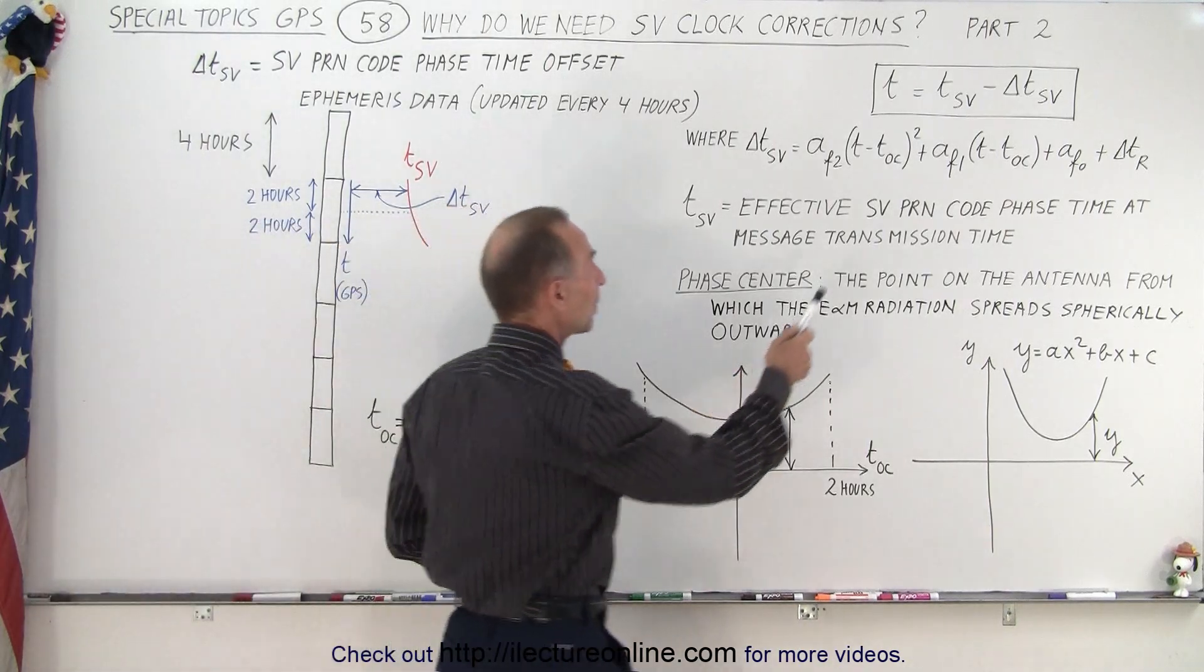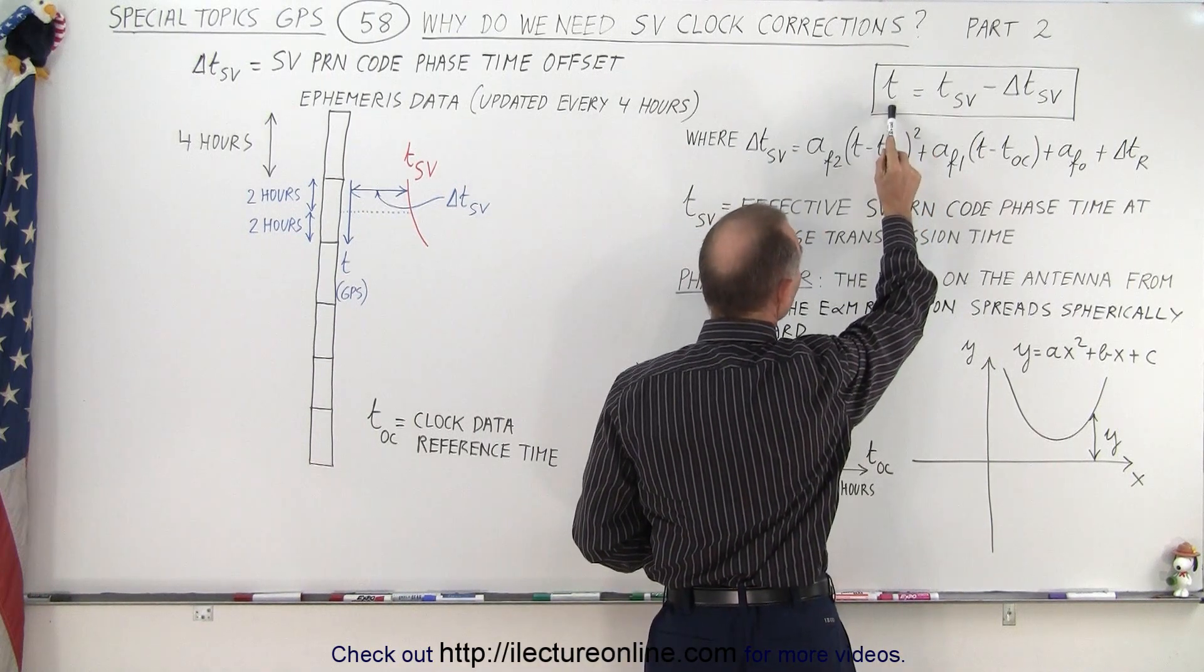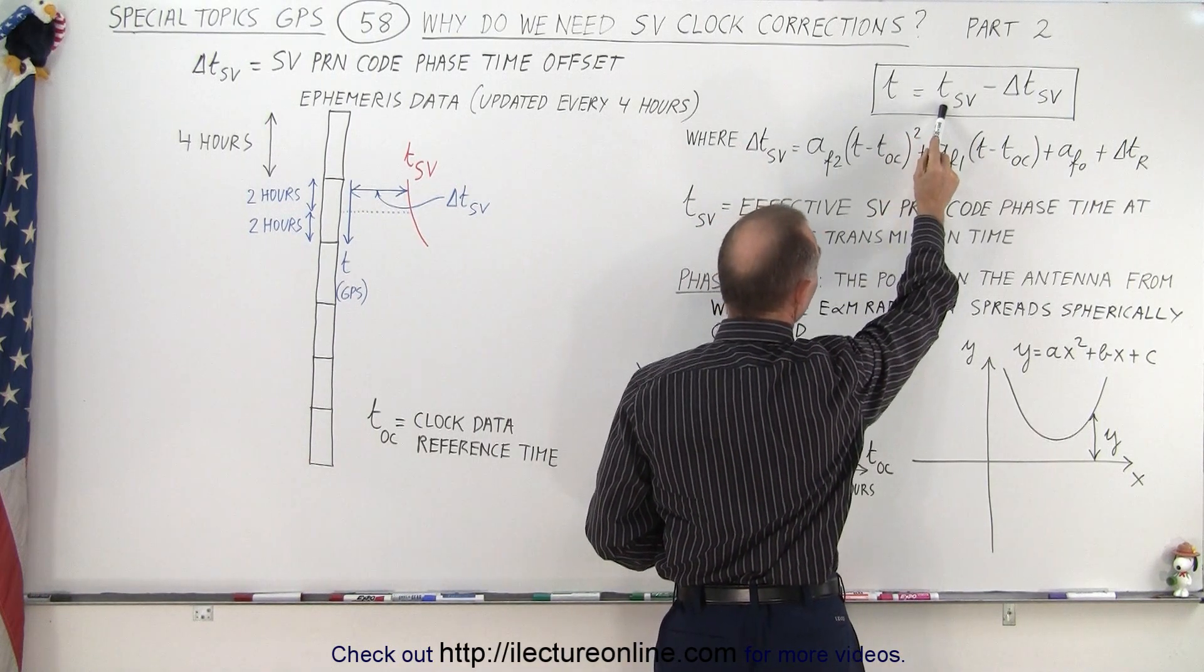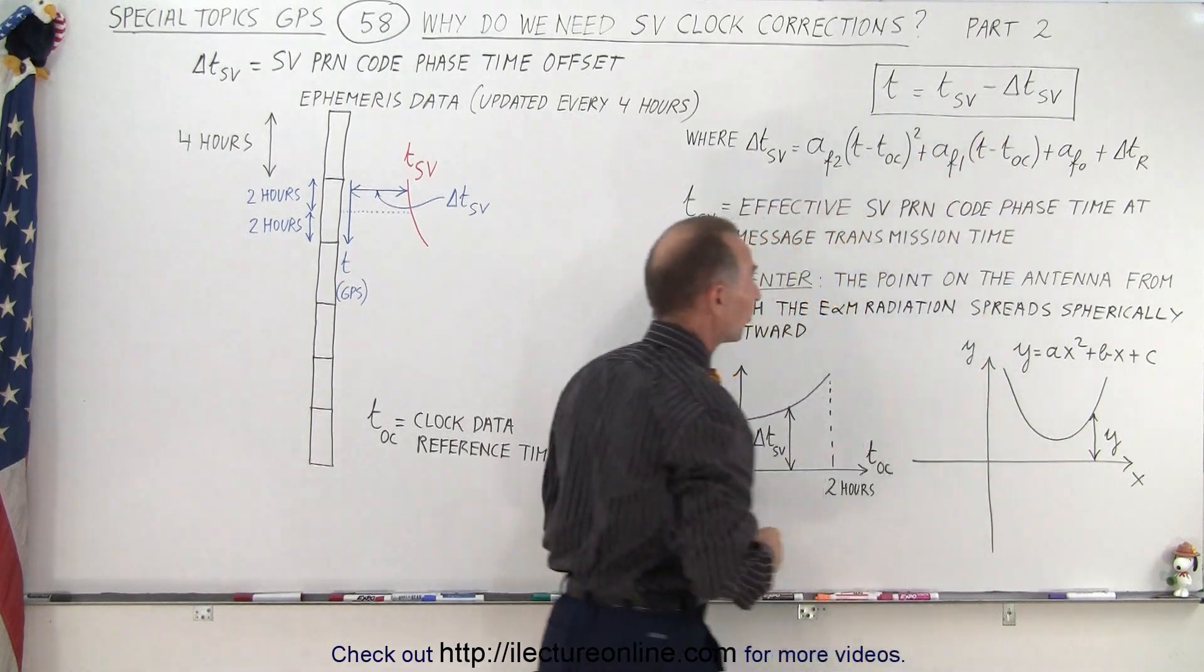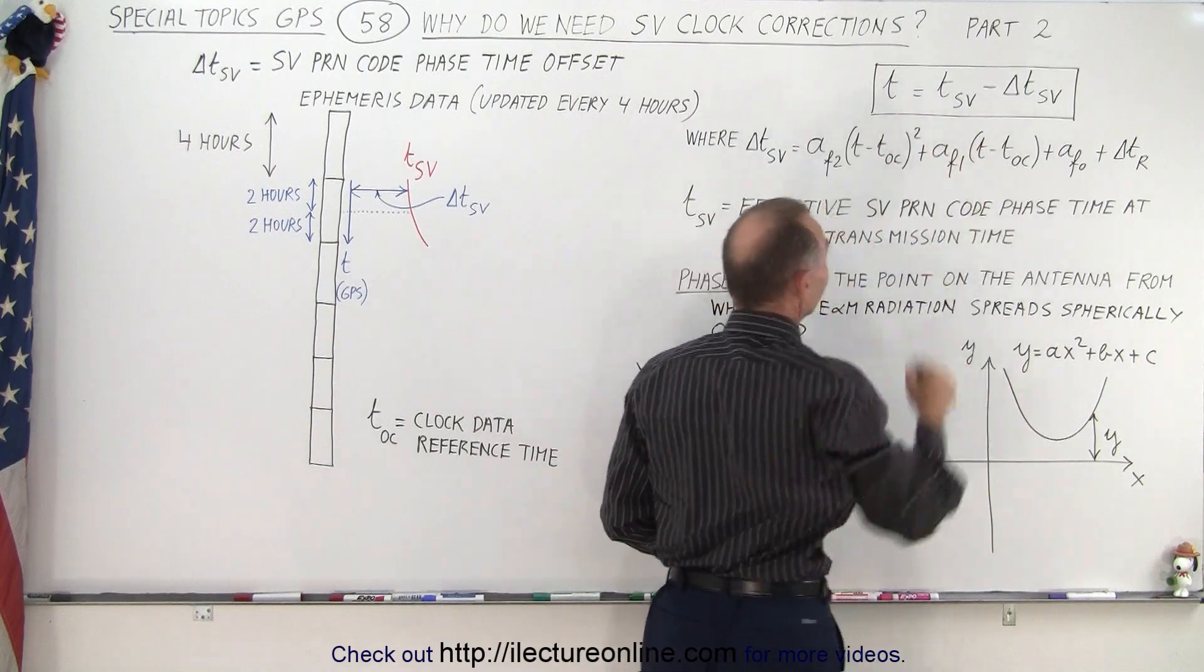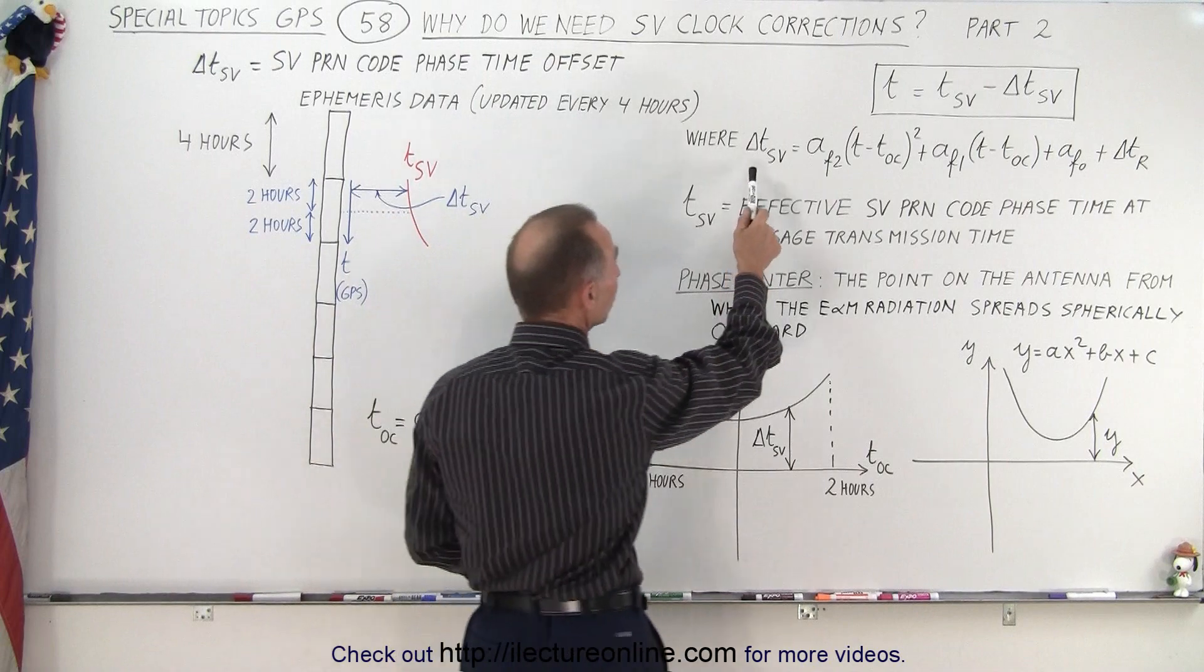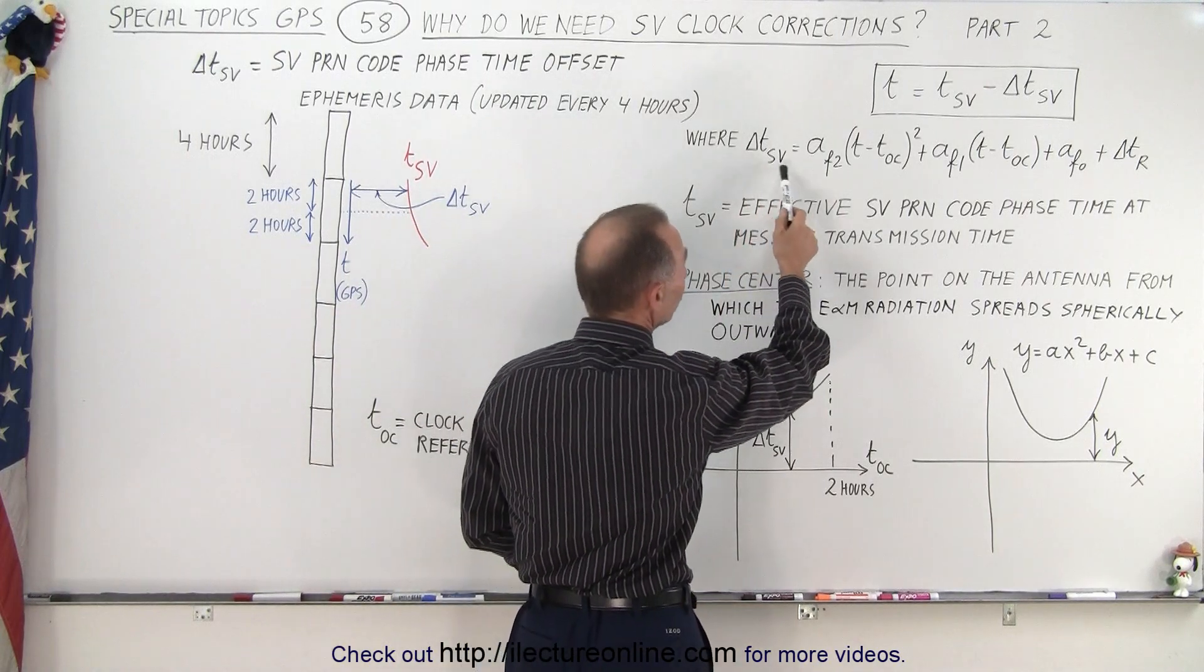That's why we have this calculation here where the GPS time is going to be equal to the satellite time minus some difference. Remember that this time runs ahead of this time, that's why we have to subtract the delta TSV. And then here we have the equation for delta TSV which looks just like a quadratic equation.